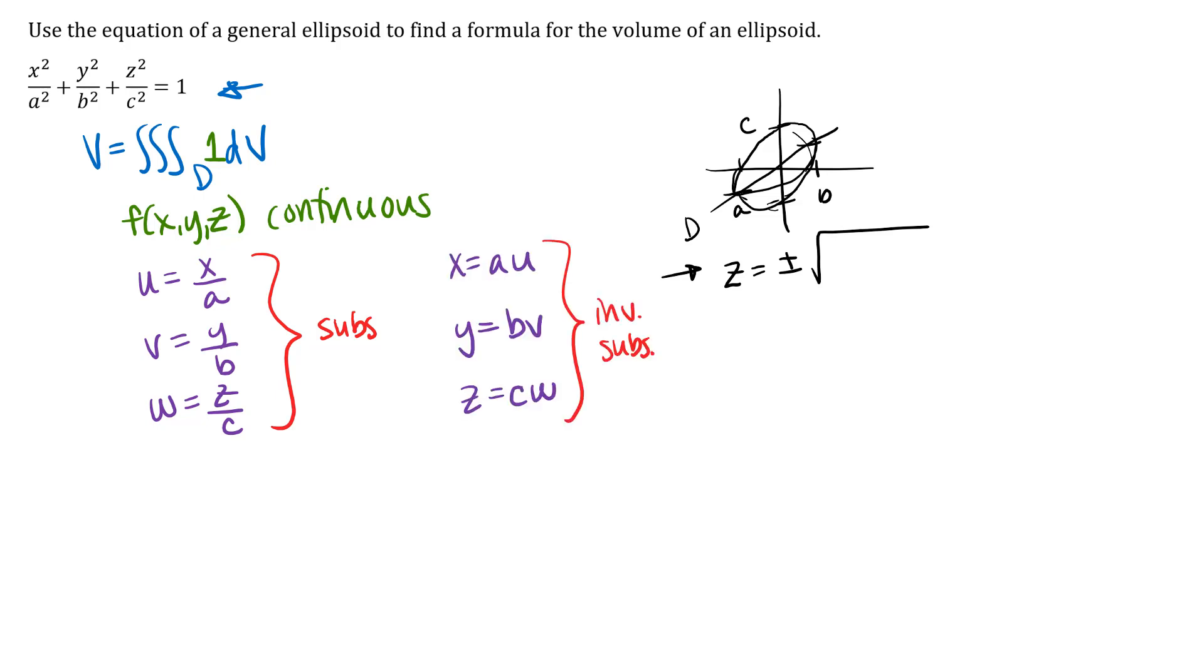These substitutions would give us a one-to-one transformation from our region d in the x, y, z coordinate system to a region g in u, v, w coordinate system.